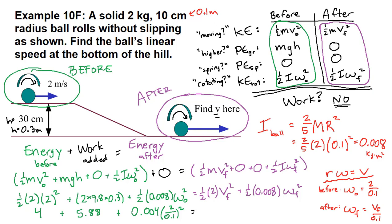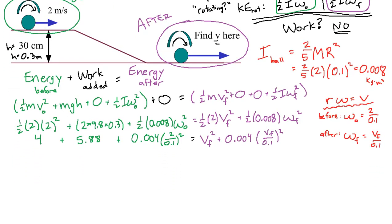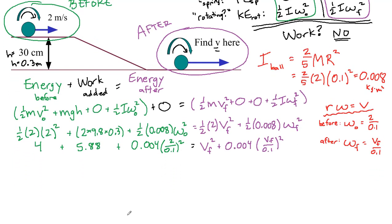And on the right side, 1/2 times 2 is just 1 so we have v_final squared. And then we have 0.004 times v_final over 0.1 squared. I'm going to scroll the page down so that we have more space to continue this problem. Remember, you can always rewind the video to go back to the top part if we need it.